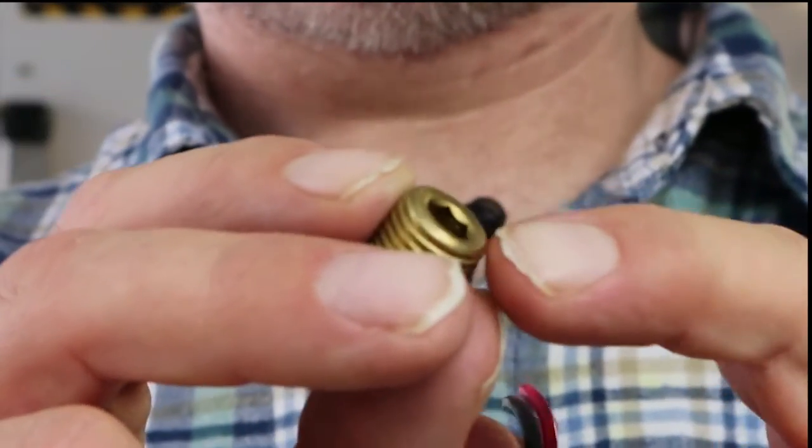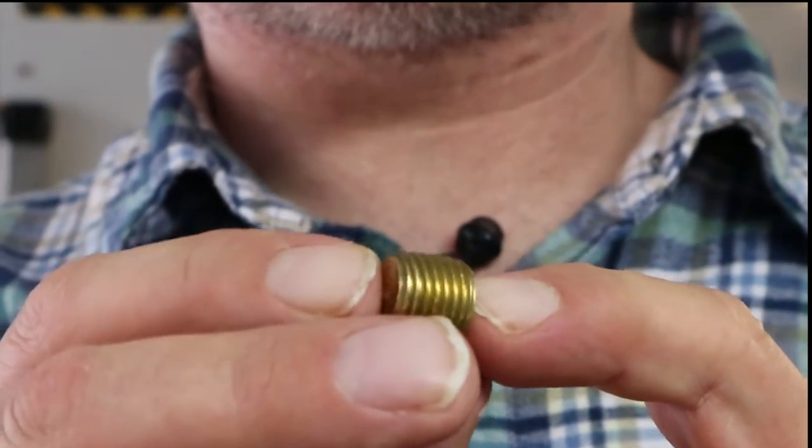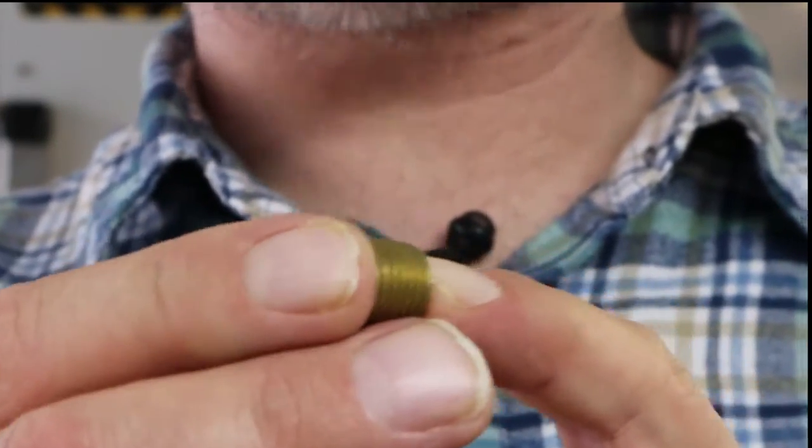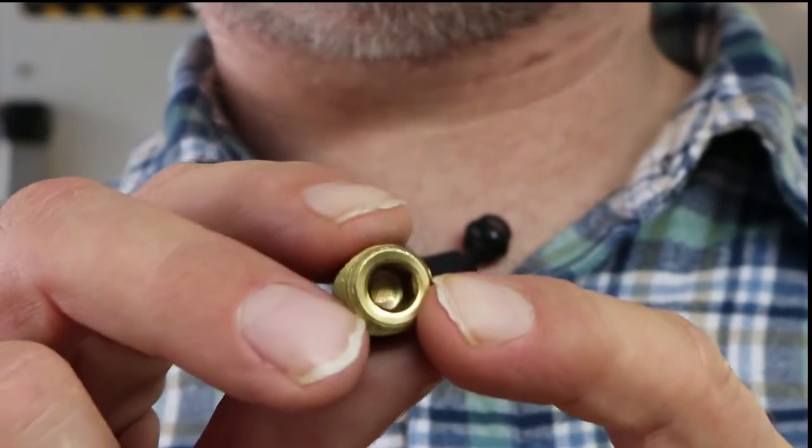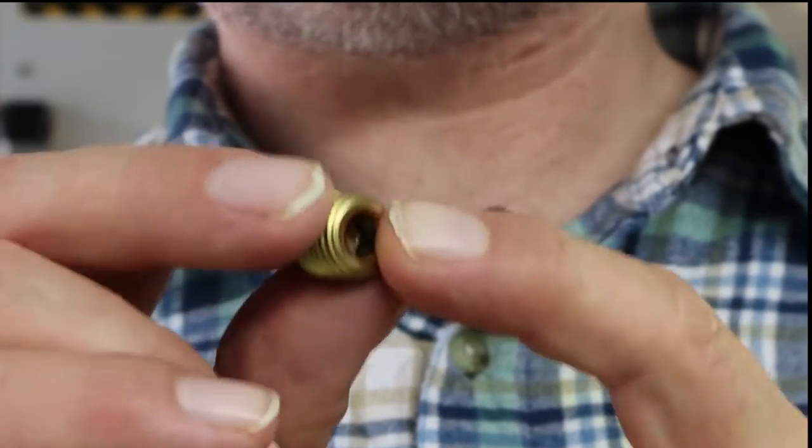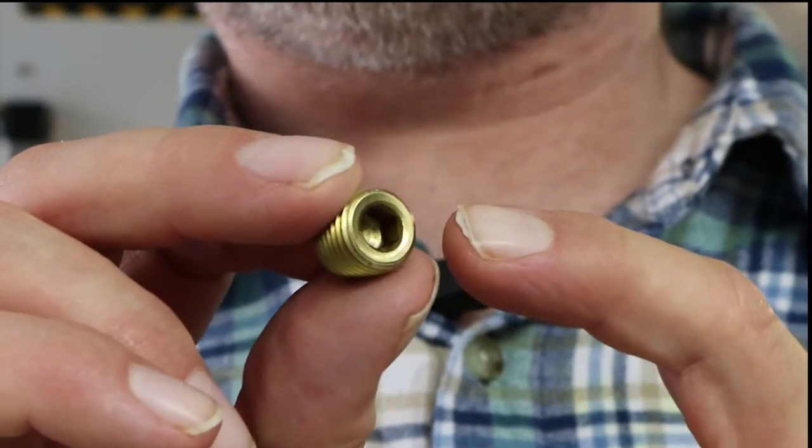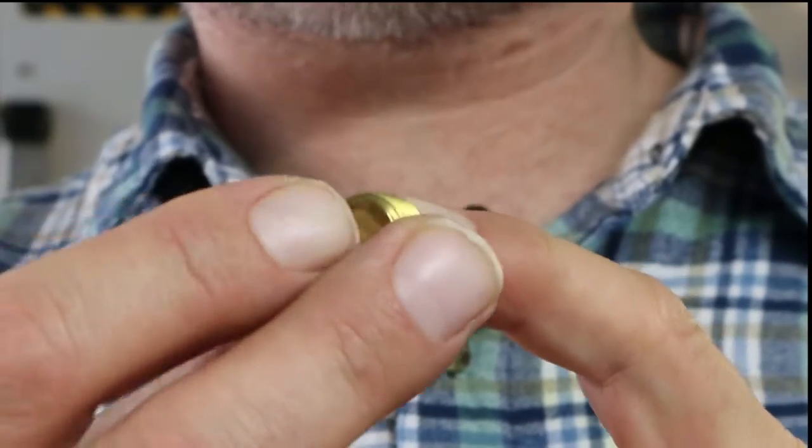So that's an MPT fitting. And it's actually brass. And there's a reason why it's brass. And I want you to look that up and get back to me on that. Why do they make fittings, MPT fittings, National Pipe Thread, we went over that, in brass?